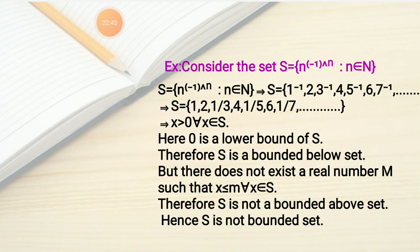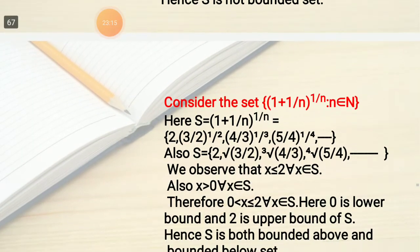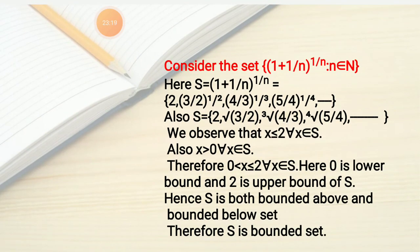Another example: S = {n·(-1)^n : n ∈ N} = {-1, 2, -3, 4, -5, 6, -7, ...}. Since all elements are positive, X > 0 for all X ∈ S, so 0 is a lower bound and S is bounded below. However, S contains 2, 4, 6, 8, ... and larger numbers, so we cannot find M such that X ≤ M for all X ∈ S. Therefore S is not bounded above, and hence S is not a bounded set.